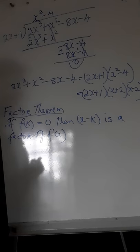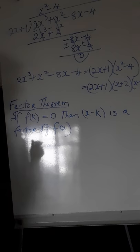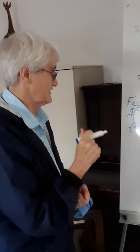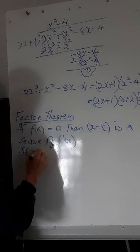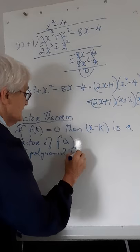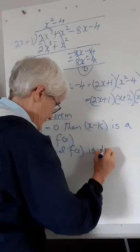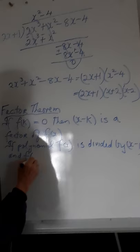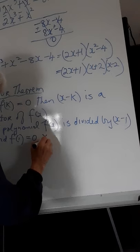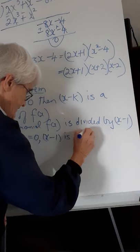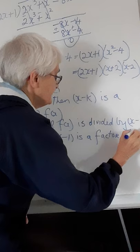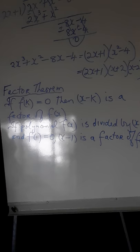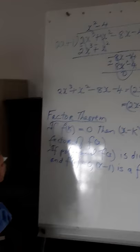The factor theorem states that if f of k is equal to 0, then x minus k is a factor of f of x. If the polynomial f of x is divided by x minus k and f of k equals 0, then x minus k is a factor of f of x. This is one of the ways we get the factors of a cubic expression, which we have already done.